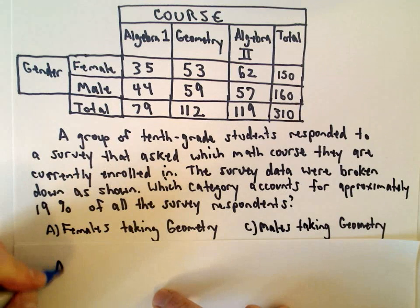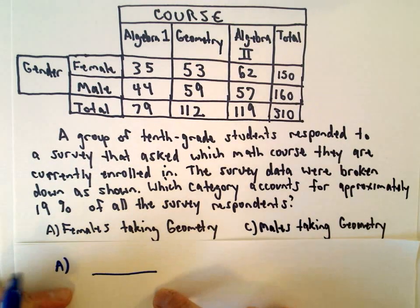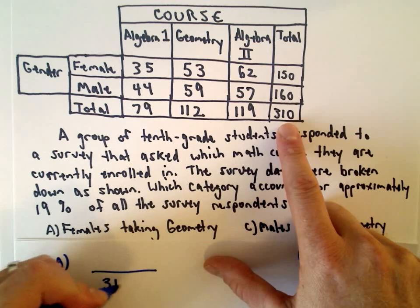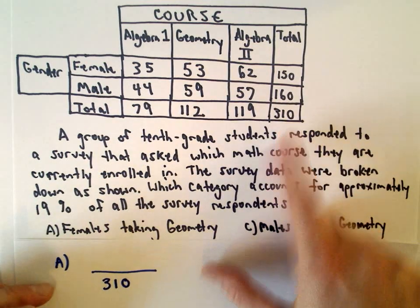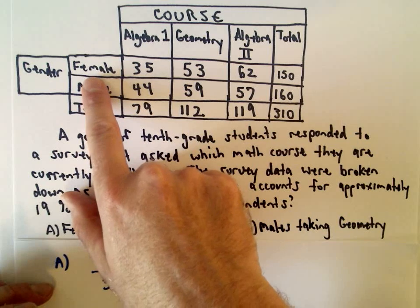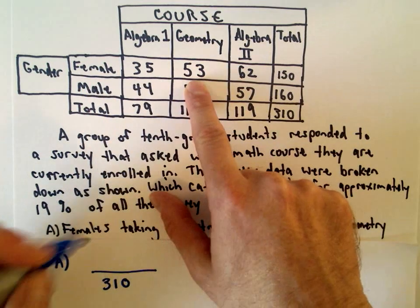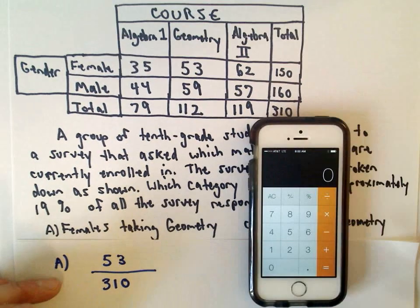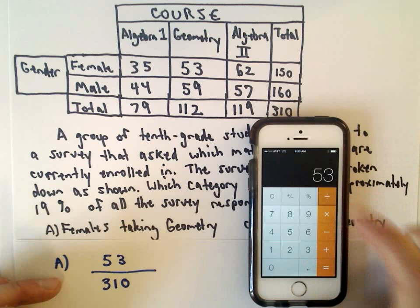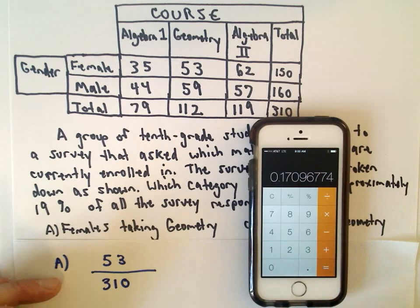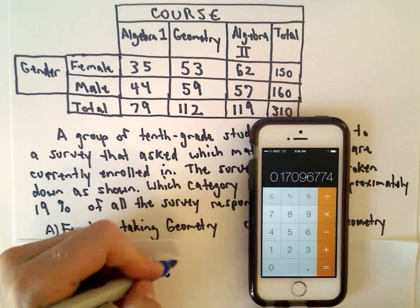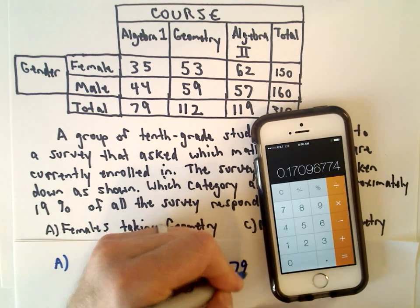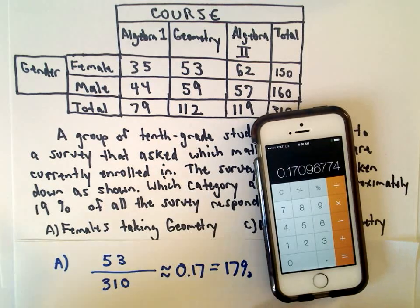Part A says females taking geometry. We're looking at all of the survey respondents — 310 respondents total. Females taking geometry: I find the row with females and geometry, which is 53. So 53 divided by 310 equals roughly 0.17, which is 17%. So answer choice A is not correct.